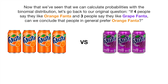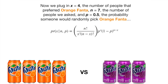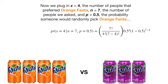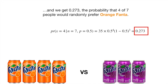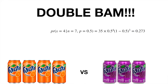Now that we've seen we can calculate probabilities with the binomial distribution, let's go back to our original question: if 4 people say they like orange Fanta and 3 people say they like grape Fanta, can we conclude that people in general prefer orange Fanta? We plug in x equals 4, the number of people that preferred orange Fanta; n equals 7, the number of people we asked; and p equals 0.5. And then just do the math. We get 0.273 — the probability that 4 of 7 people would randomly prefer orange Fanta. Double bam!